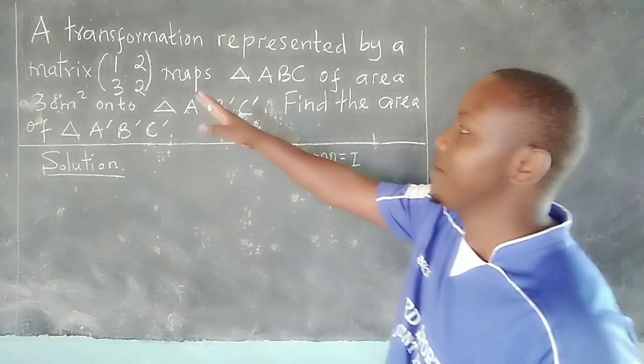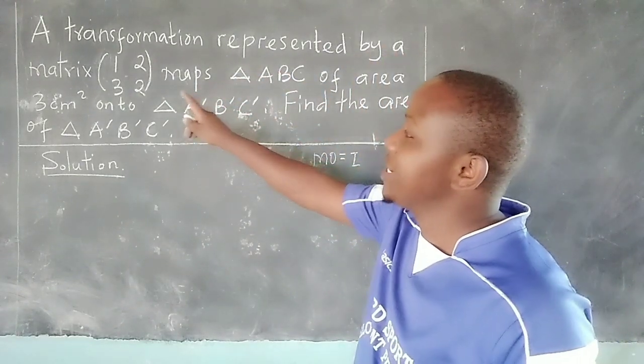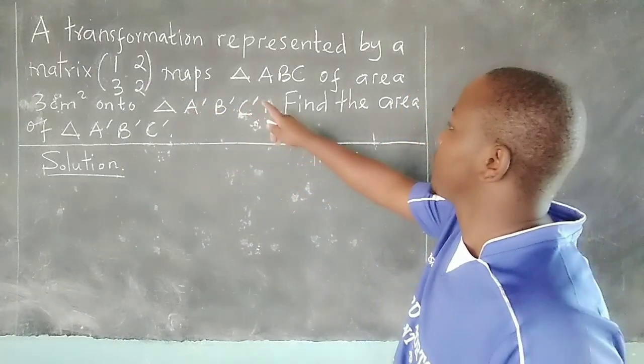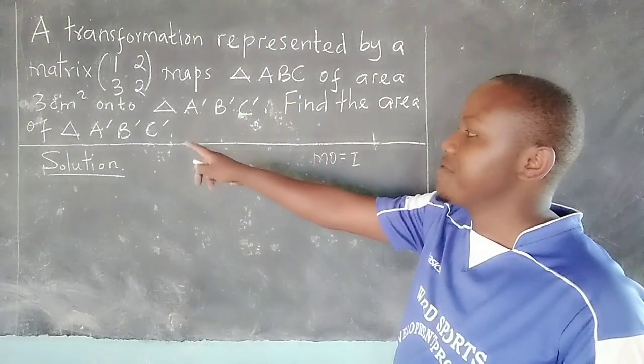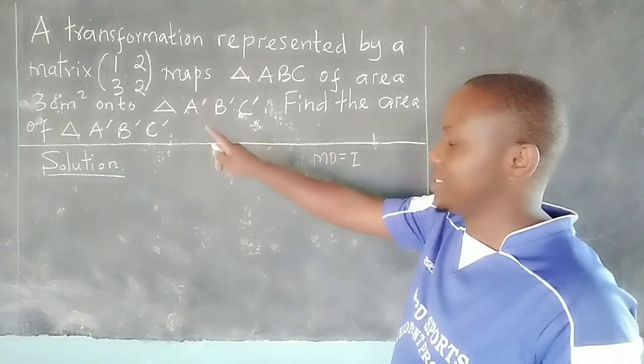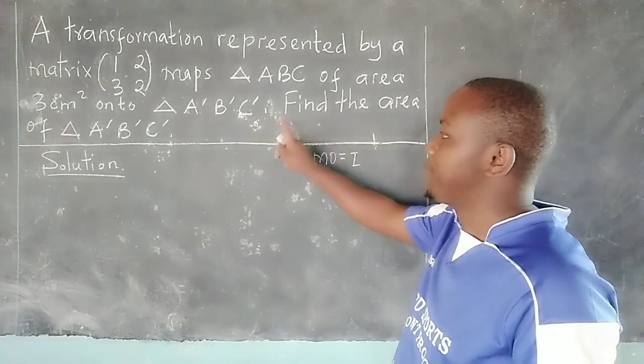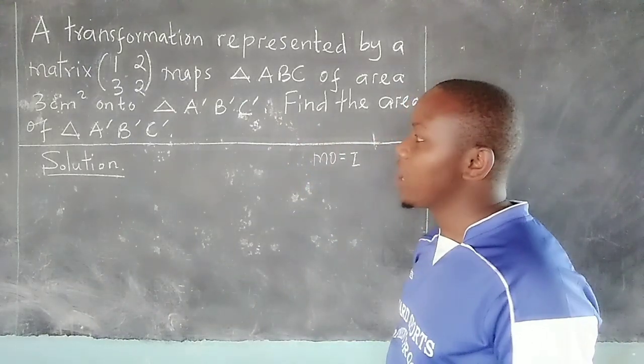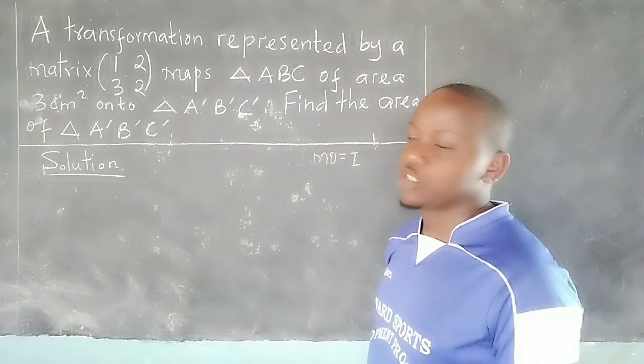For instance, here we are told there is a transformation represented by a matrix (1, 2, 3, 2) which maps triangle ABC of area 3 square centimeters onto triangle A'B'C', and find the area of the triangle A'B'C'. So what we do here,